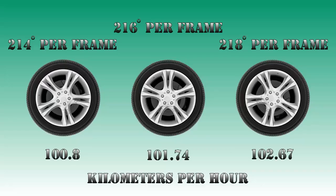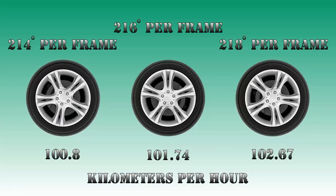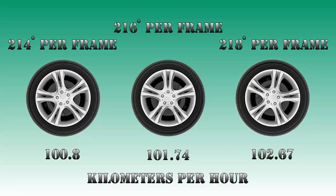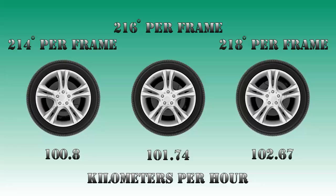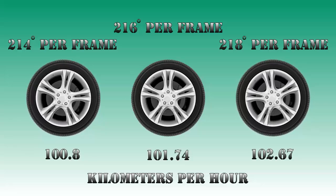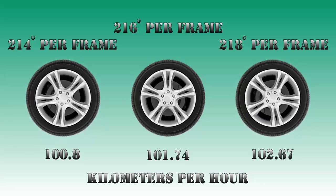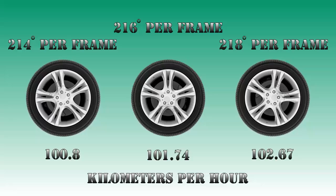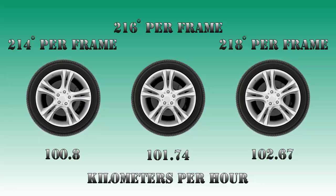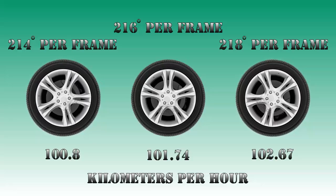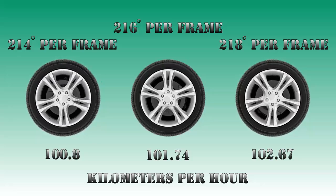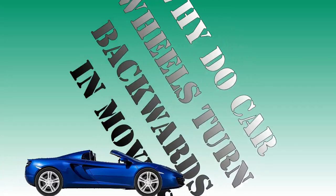Just for the fun of it I decided to put in one of the higher speeds as well, and you will see that the effect looks exactly the same. Obviously, if the frames per second of the camera, the diameter of the wheel, or the number of spokes change, the numbers will change — but the effect will still happen.